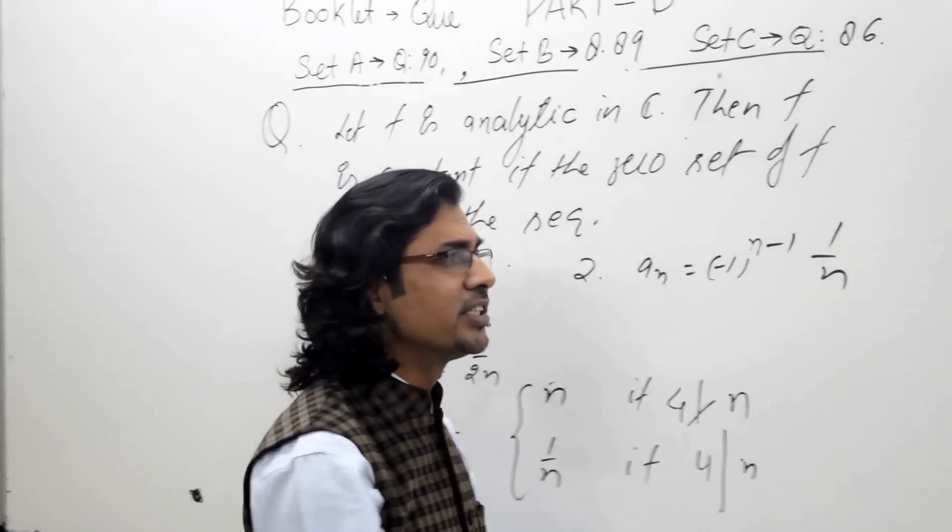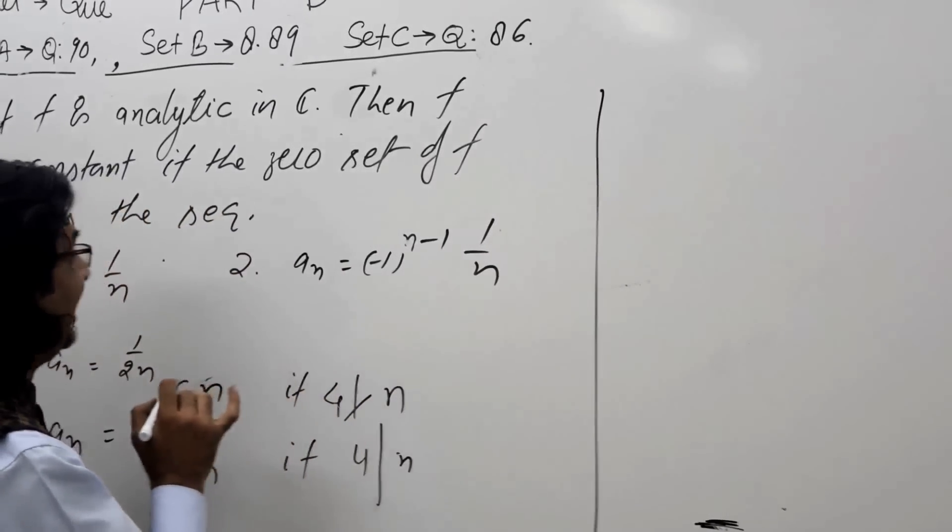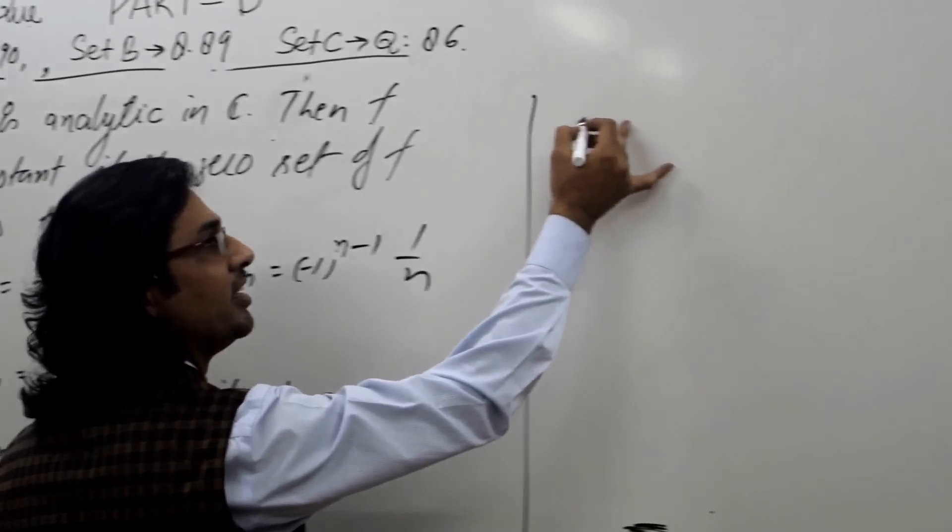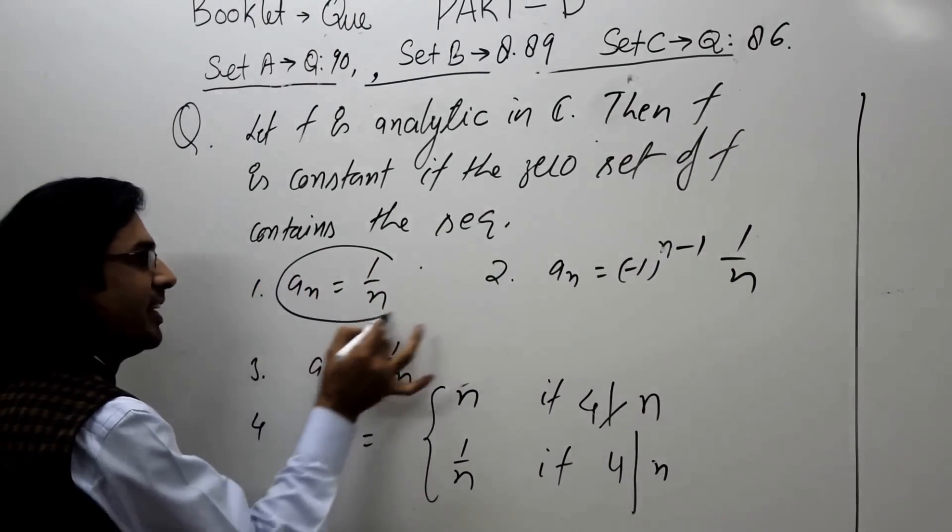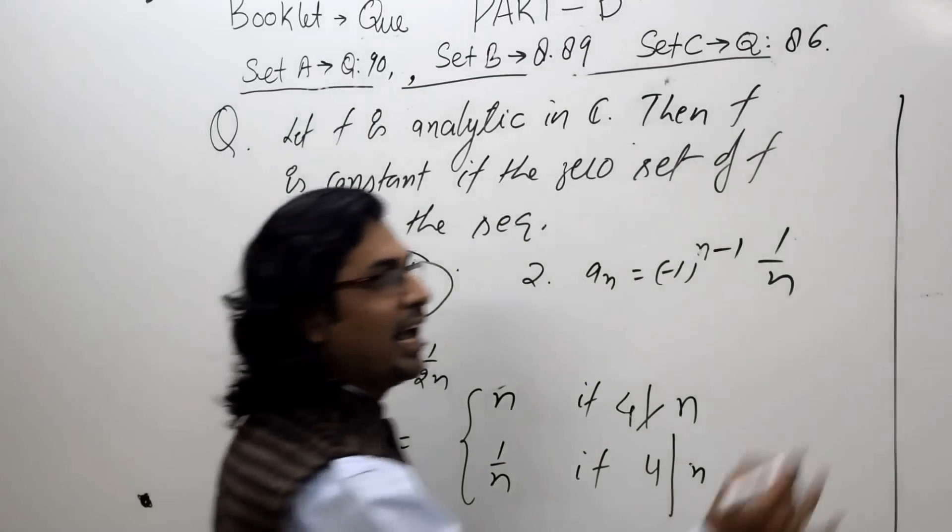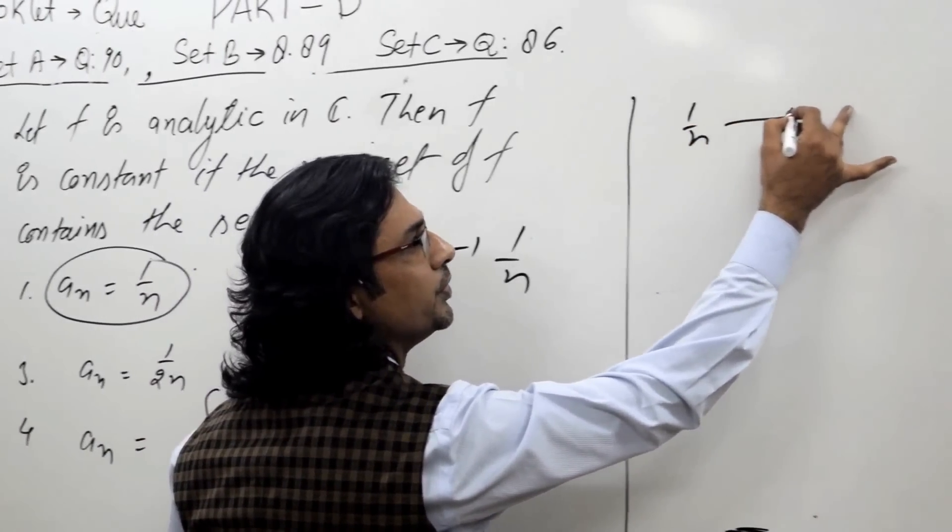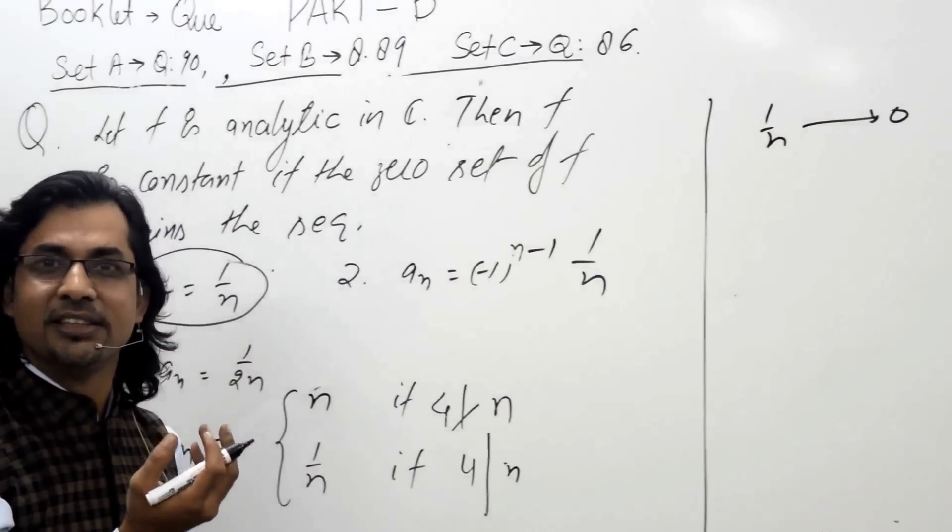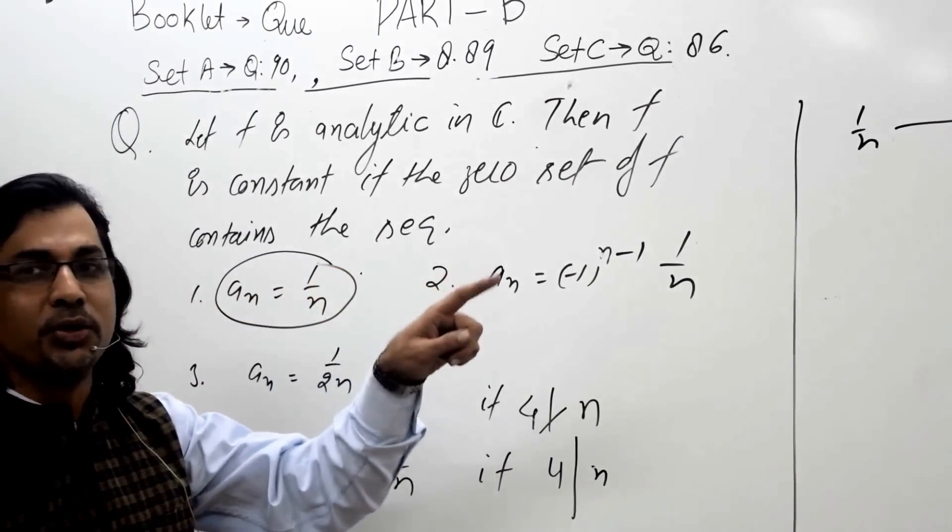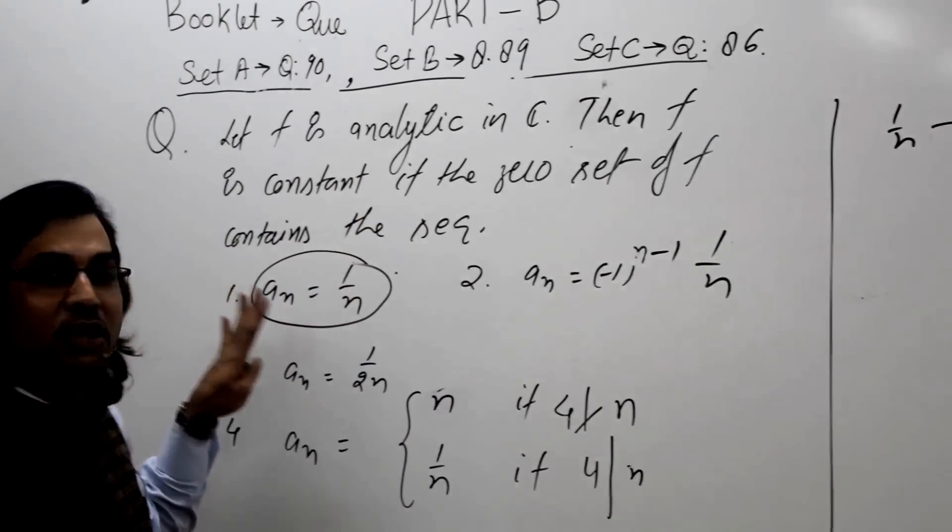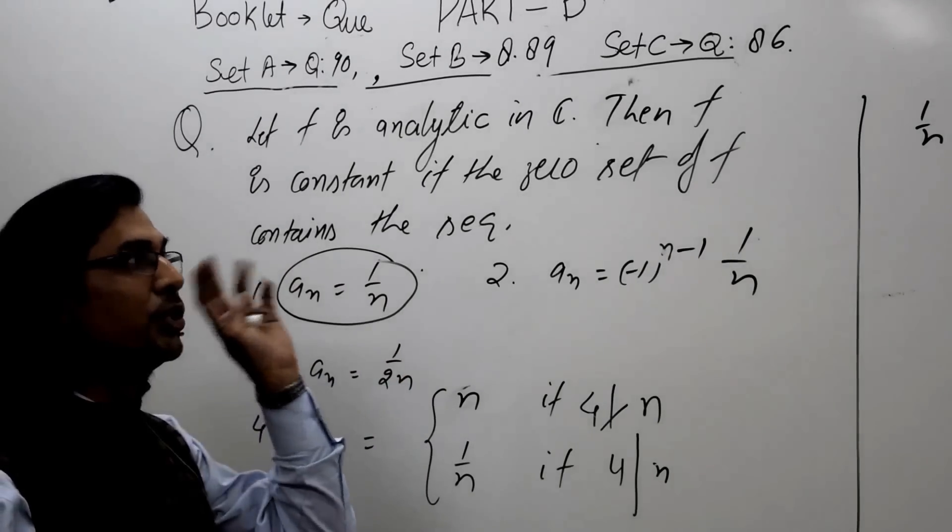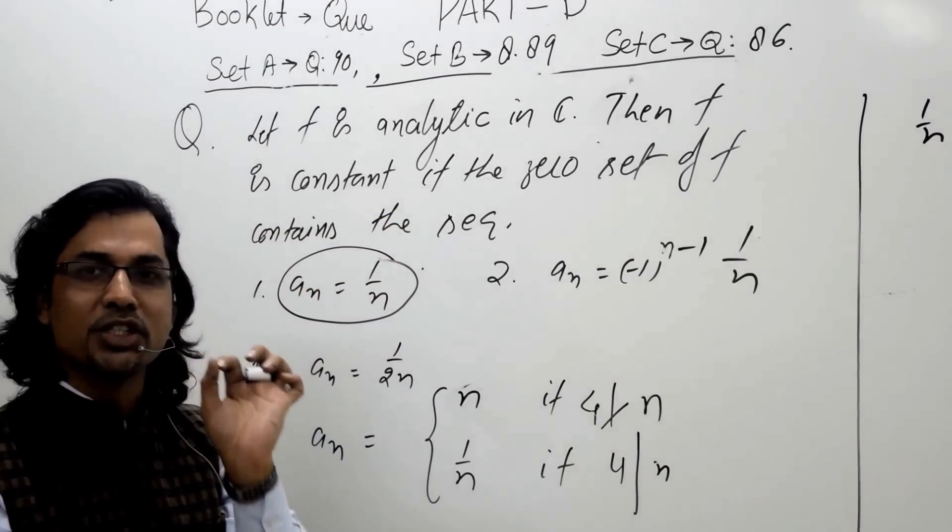Here are the options we can see easily. First option: this is 1/n and a_n tends to 0. Very simple sequence. So it has limit point 0 and the function is vanishing on this set, hence identically 0, hence constant. So first option is correct.